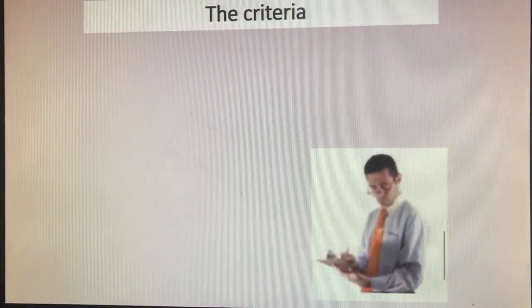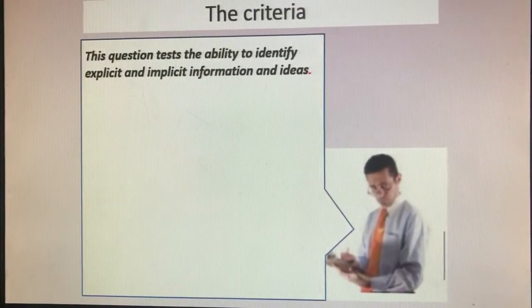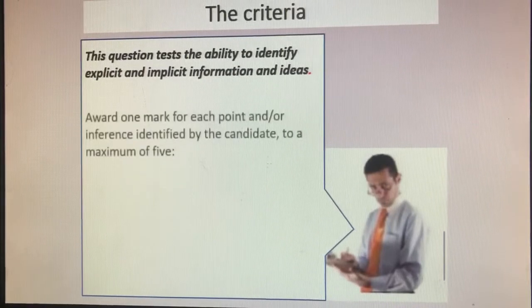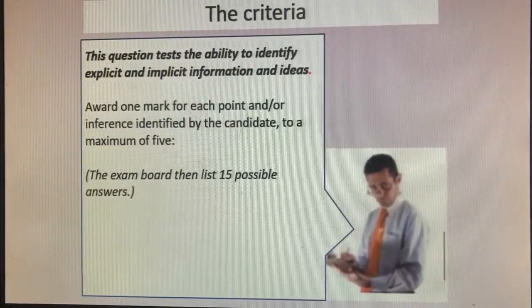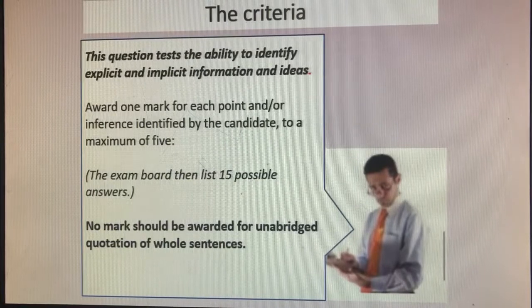The criteria on which you're judged: this question tests the ability to identify explicit and implicit information and ideas. Explicit means the exam board will give you some of the answers, but inferences based on evidence are also likely to get you marks. One mark is awarded for each point or inference identified, to a maximum of five. No mark should be awarded for unabridged quotation of whole sentences — in other words, if your answer is too long or you've quoted too much of the text, they won't give you the mark. They're looking for short, concise responses.